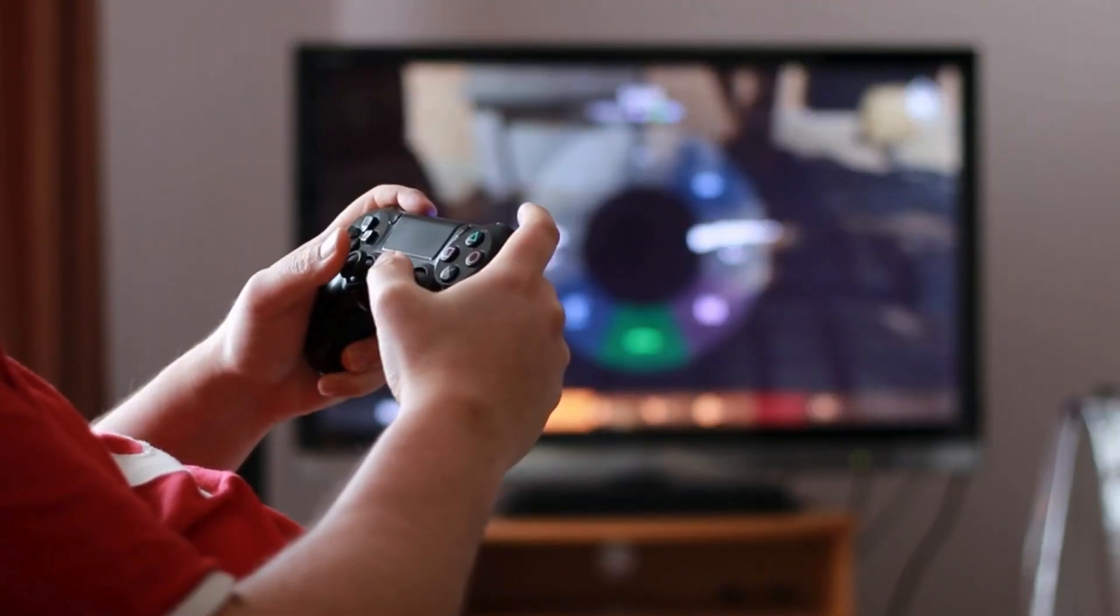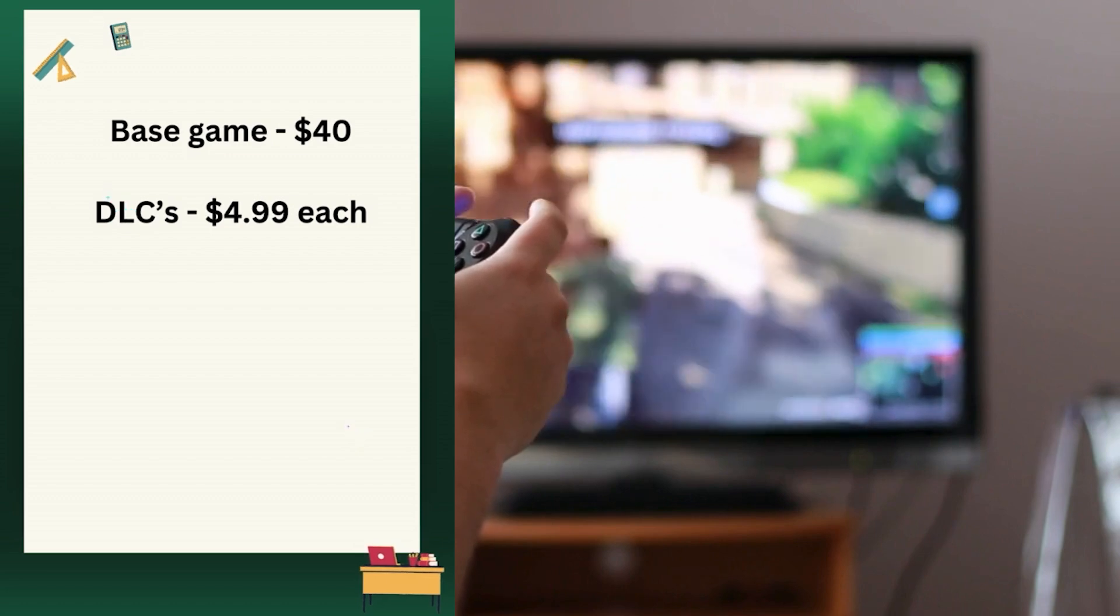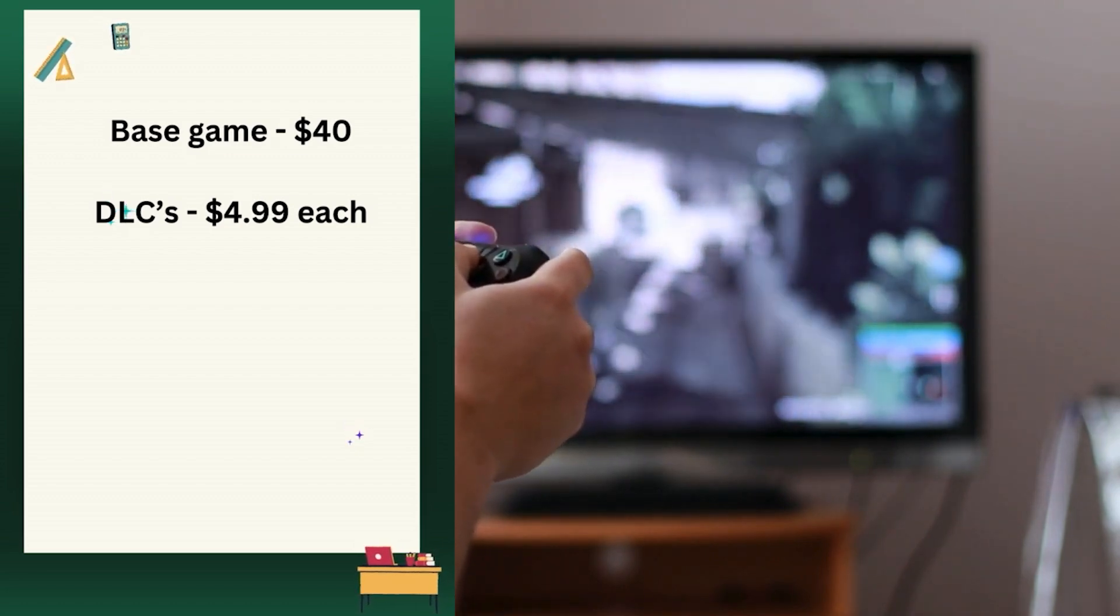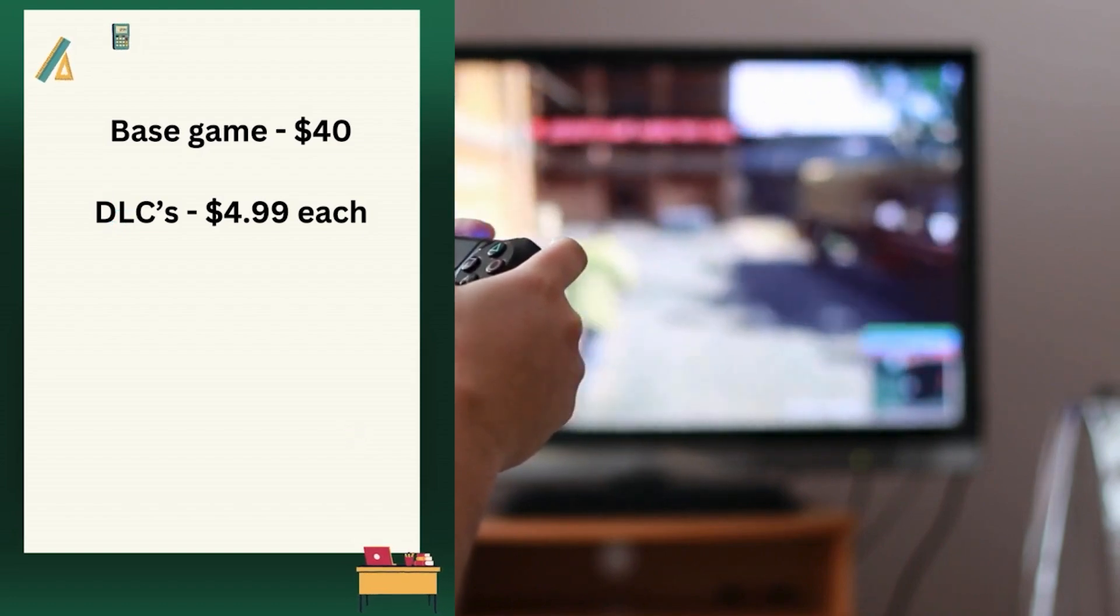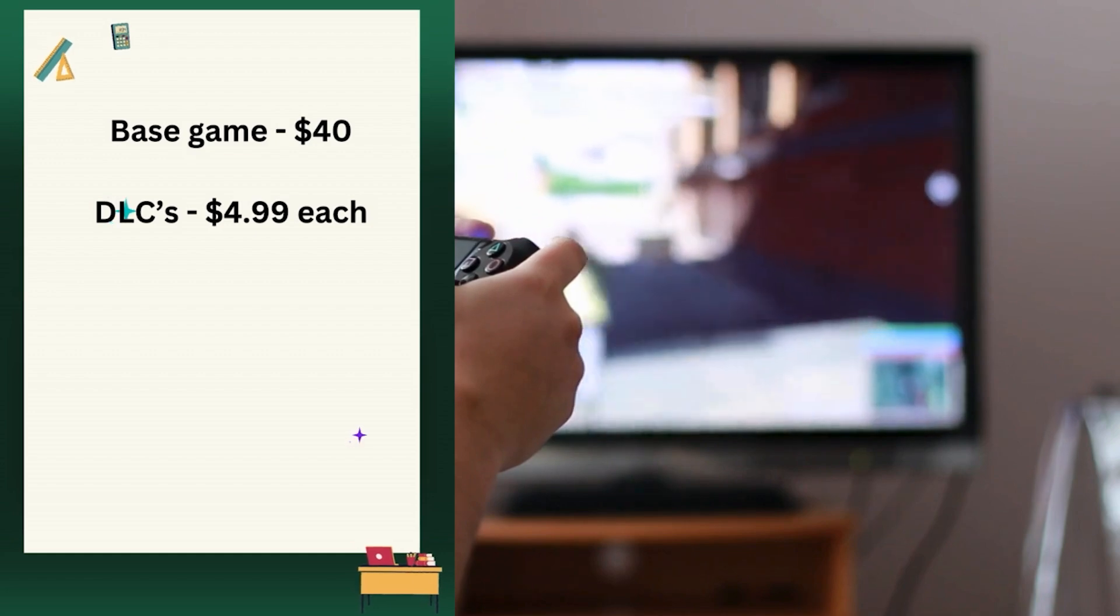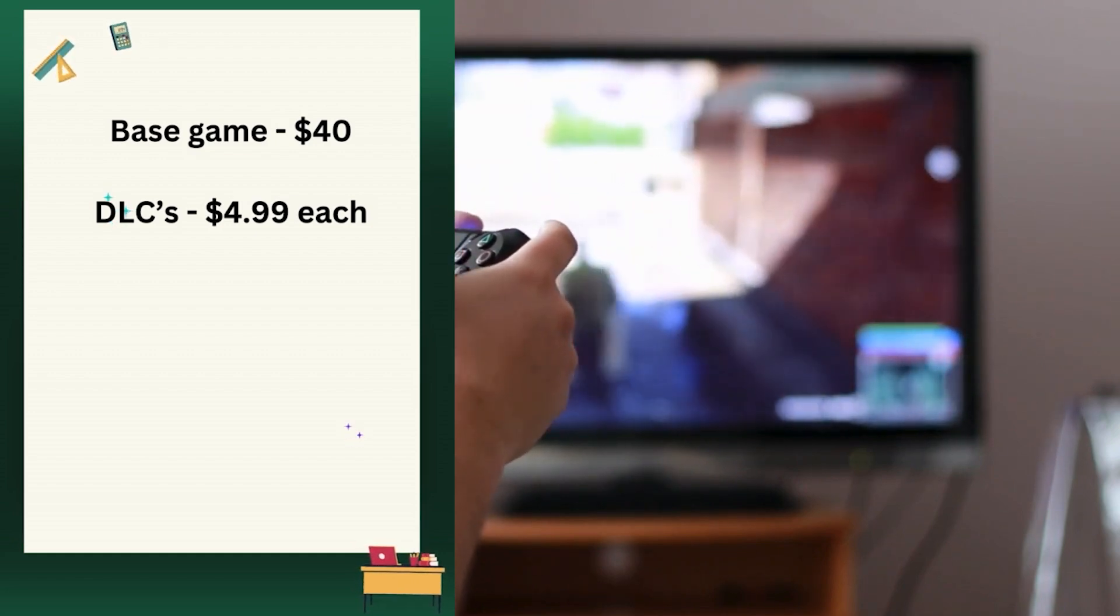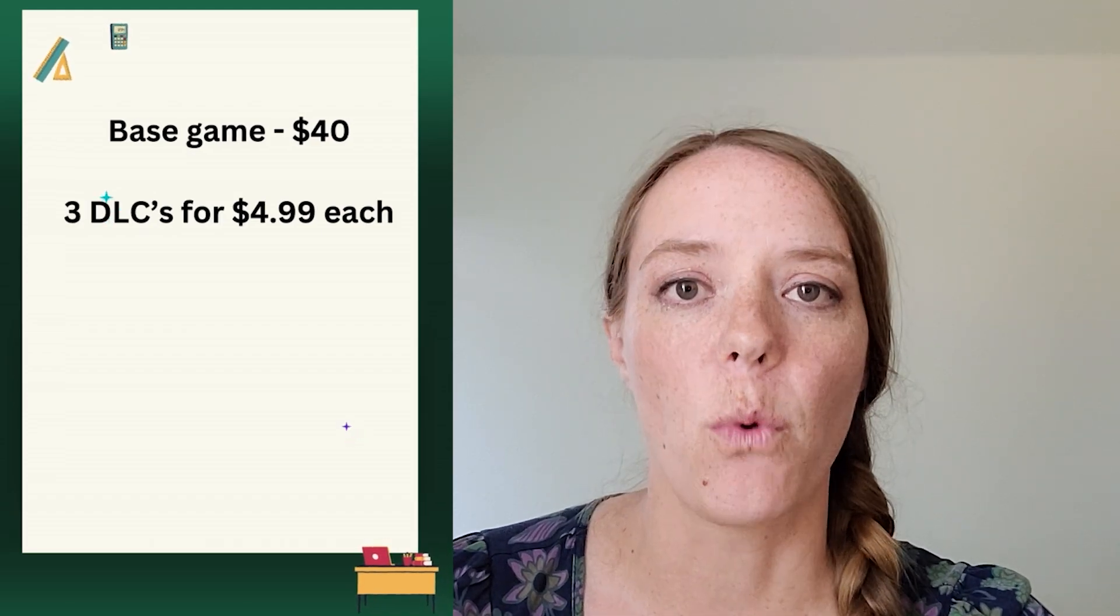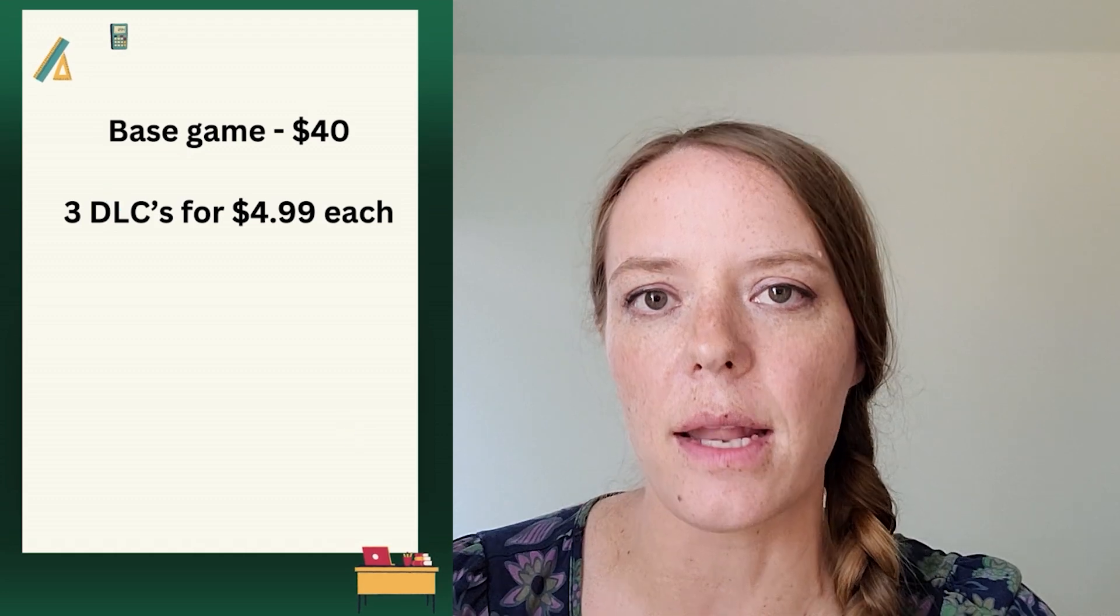Okay, so this first example, the base game is $40, but then there's different DLCs or downloadable content that we could try out that would add a lot of features and just make it more fun. So let's start figuring out a good equation for if I get that base game at $40 and then I get three DLCs for $4.99 each. I want you to see if you can write that as an equation.